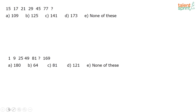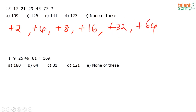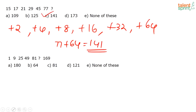Another series: 15, 17, 21, 29, 45, 77, _. The differences are 2, 4, 8, 16, 32 — each doubling. The next difference is 64, so 77 + 64 = 141.